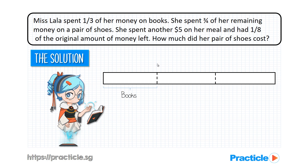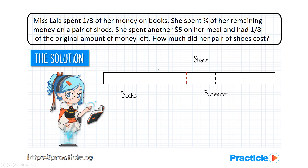Next, we are given that she spent three-quarter of her remaining money on a pair of shoes. Where is the remainder? It would be this part over here. We need four units, but here we only have two units. In order to turn this into four units, we need to divide each unit into two smaller units. Now that we have four units here, she spent three of them on a pair of shoes. Since we divided each big unit into two smaller units, let's do the same over here for easier comparison later.